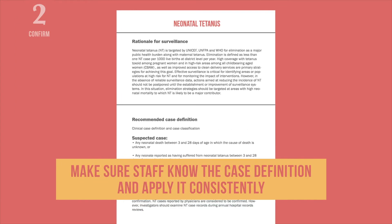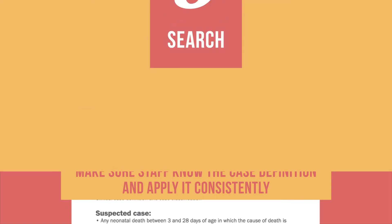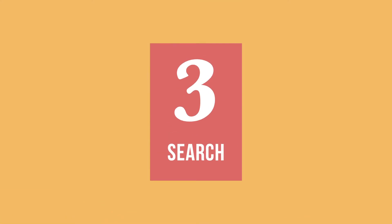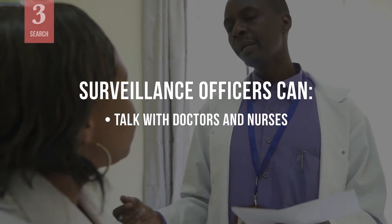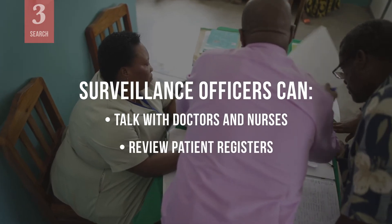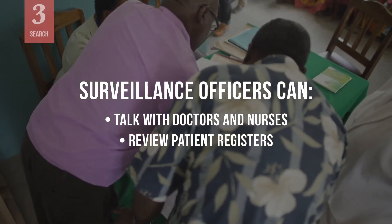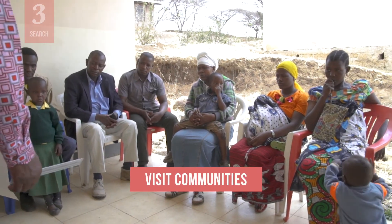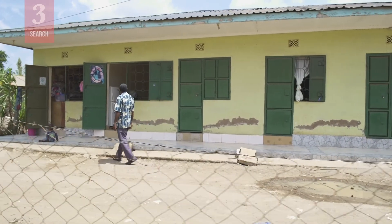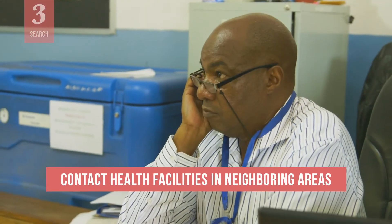Also, make sure staff know the working case definition and that they apply it consistently to all cases under investigation. Another key activity is to search for additional cases. To look for unreported cases, surveillance officers can visit health facilities in the district catchment area to talk with doctors and nurses. They can also review patient registers for cases that fit the case definition or diagnoses consistent with the disease under investigation. As a manager, you should visit the communities where cases were reported and talk to community leaders. If feasible, organize a house-to-house search for similar cases and contact health facilities in neighboring areas to determine the extent of the outbreak.